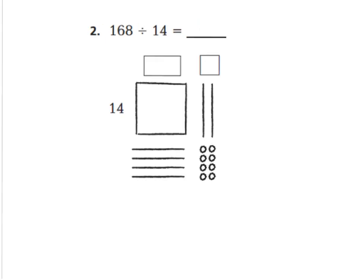Here's another sketched example for number 2. My equation says 168 divided by 14, so I want to create 168 using a model drawing. Let's go ahead and make 100 using our mat, also known as the flat piece. If this has a value of 100, I need to lay down long pieces to show 14 on this side for the value. We have 10, 11, 12, 13, 14. So I have to have 14 here because this is my divisor.